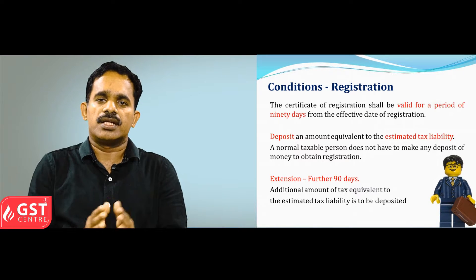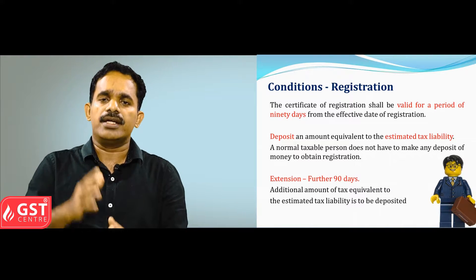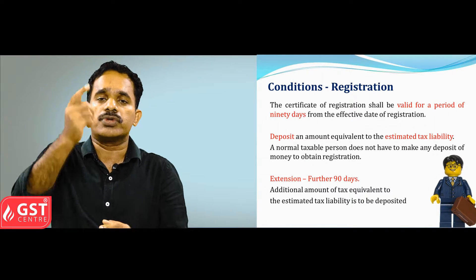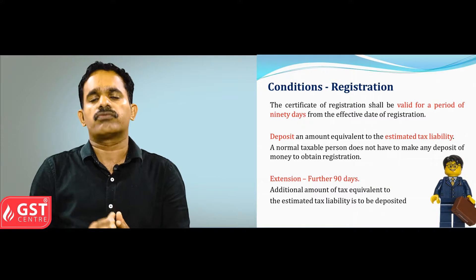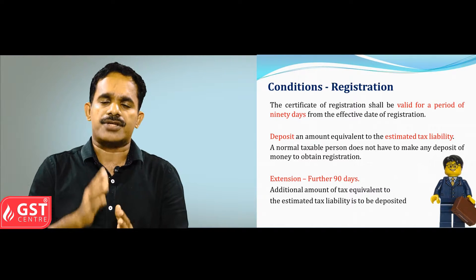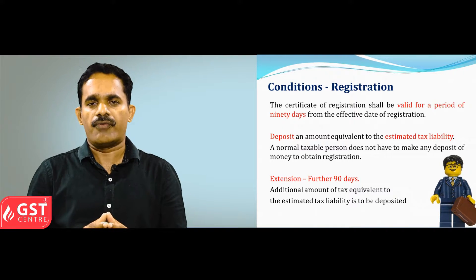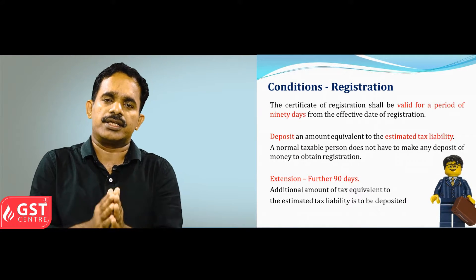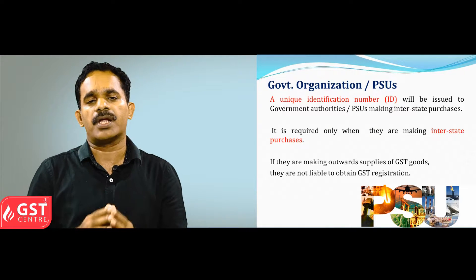The proper department officer can extend the validity period for further 90 days. The initial registration period is only for 90 days, and if after 90 days the casual taxable person or non-resident taxable person is willing to continue doing business in India, they have to renew their registration certificate. The department officer can renew it for further 90 days, and again the advance tax amount should be paid. The extension should not exceed 90 days.